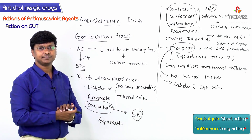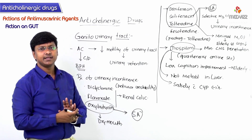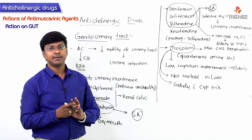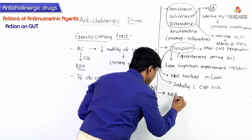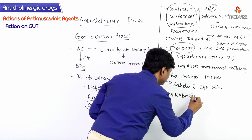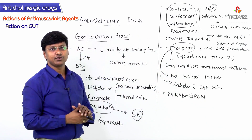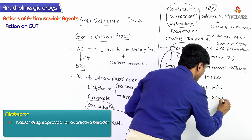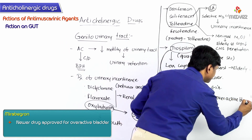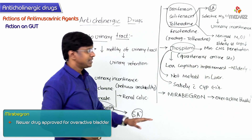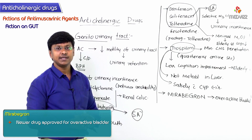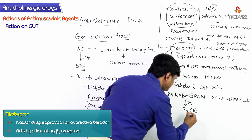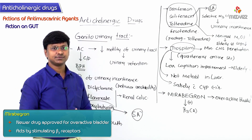Recently, a new drug has been approved for overactive bladder called mirabegron. Mirabegron acts by stimulating beta-3 receptors.